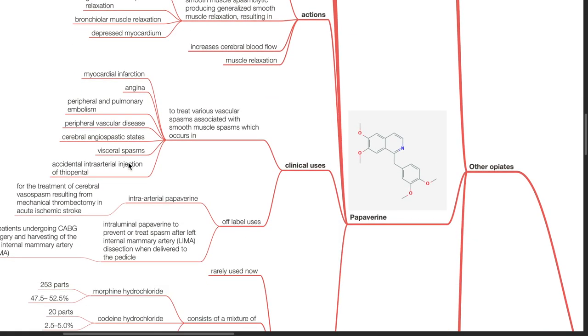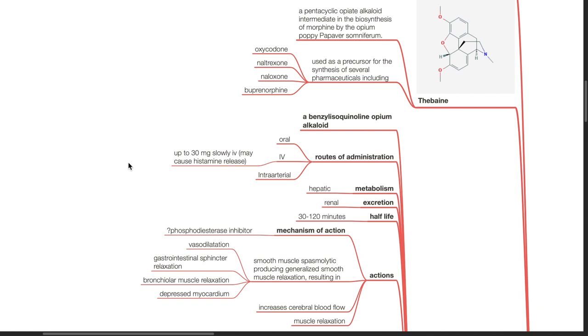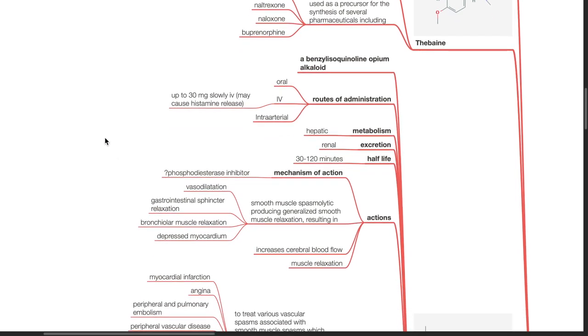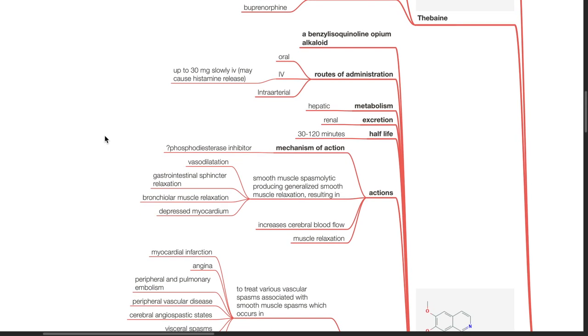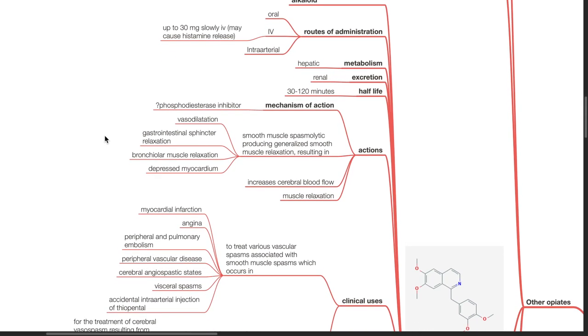Papaverine. This is a benzylisoquinoline opium alkaloid, routes of administration, oral, IV or intra-arterial. Metabolism is hepatic, excretion is renal, half-life is 30 to 120 minutes.